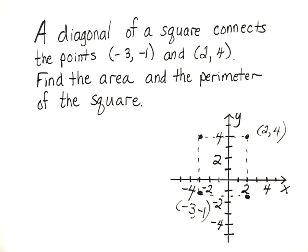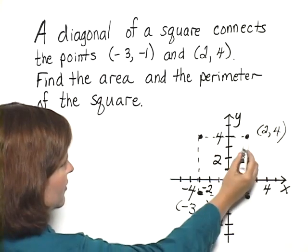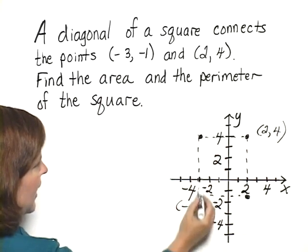Now we're looking for the area and the perimeter of the square. The area of a square would be, since all these four are the same side, we would take a side and square it.